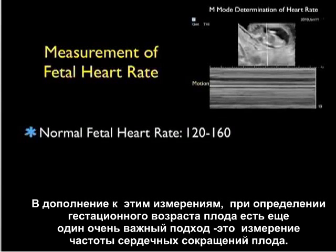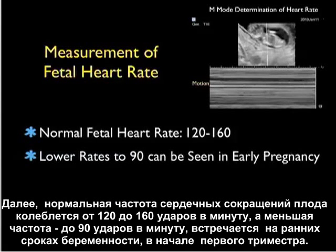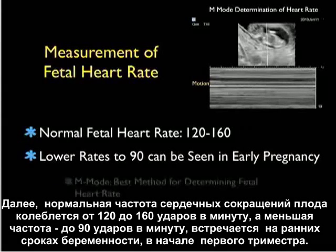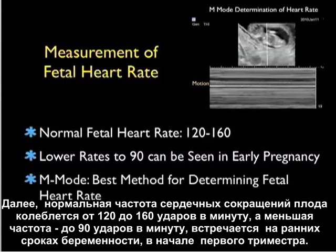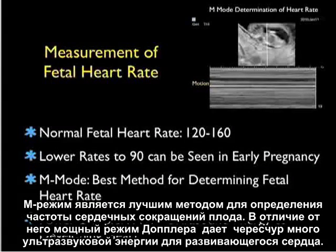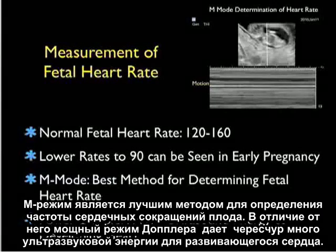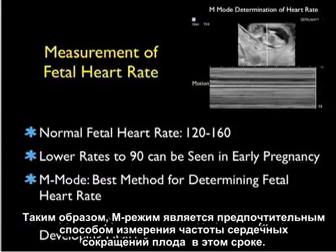In addition to measuring gestational age, another very important concept is to get a measurement of the fetal heart rate. Normal fetal heart rates will range from 120 to 160 beats per minute, but lower rates down to 90 beats per minute can be seen in early pregnancy in the first trimester. M-mode is the best method for determining fetal heart rate. Power Doppler, in contrast, gives more ultrasonic energy to the developing heart, so M-mode is the preferred way of measuring fetal heart rate.